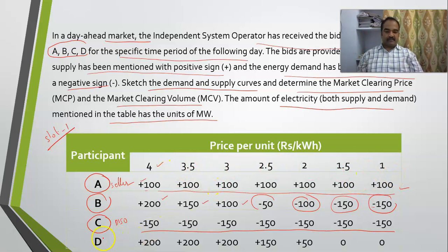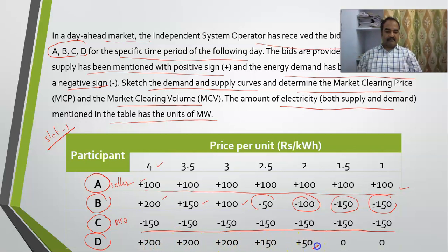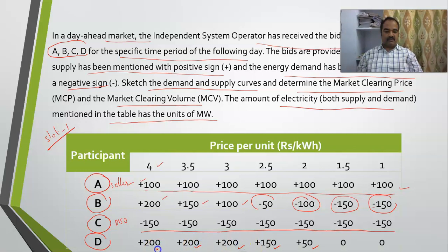Participant C is like a discount store — he expects a constant demand irrespective of the price. Participant D is another seller just like B, and his selling profile is varying with respect to the market clearing price. These are the bids received in an auction for a specific slot.